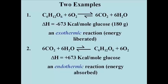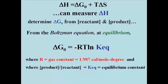Now the second example describes photosynthesis, the exact opposite of respiration. It should be no surprise that the enthalpy change, or delta H, for this reaction is plus 673 kilocalories per mole of glucose made. A reaction that absorbs heat will have a positive delta H, and is by definition endothermic.